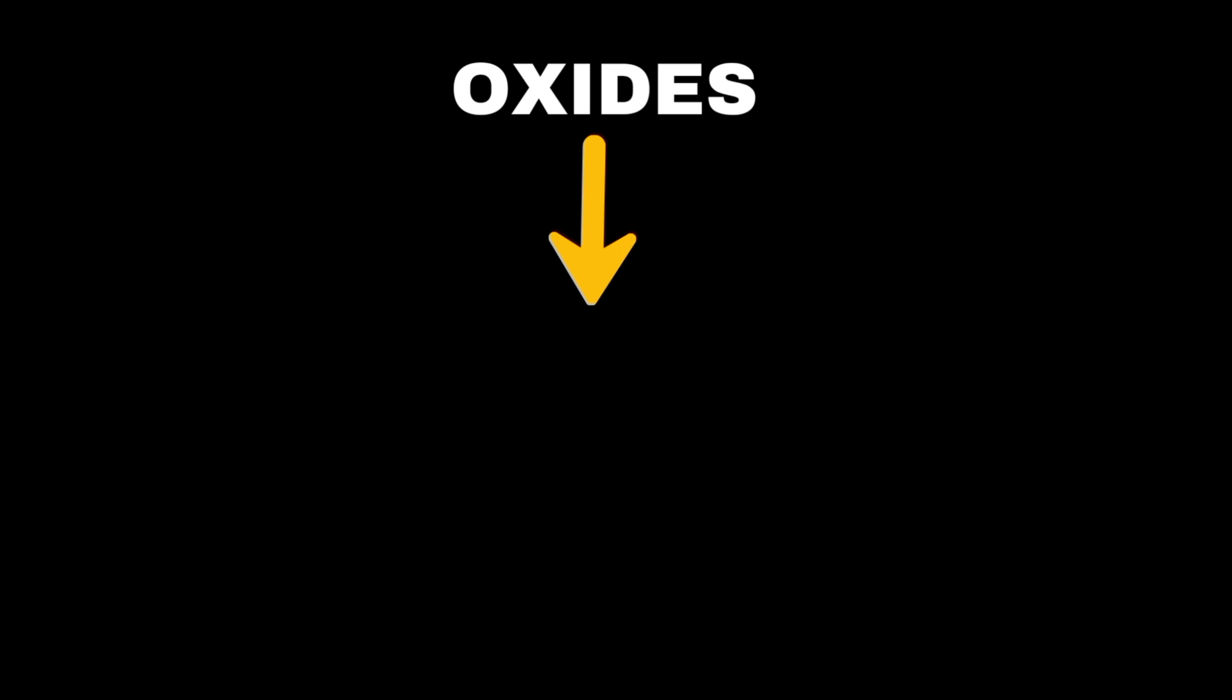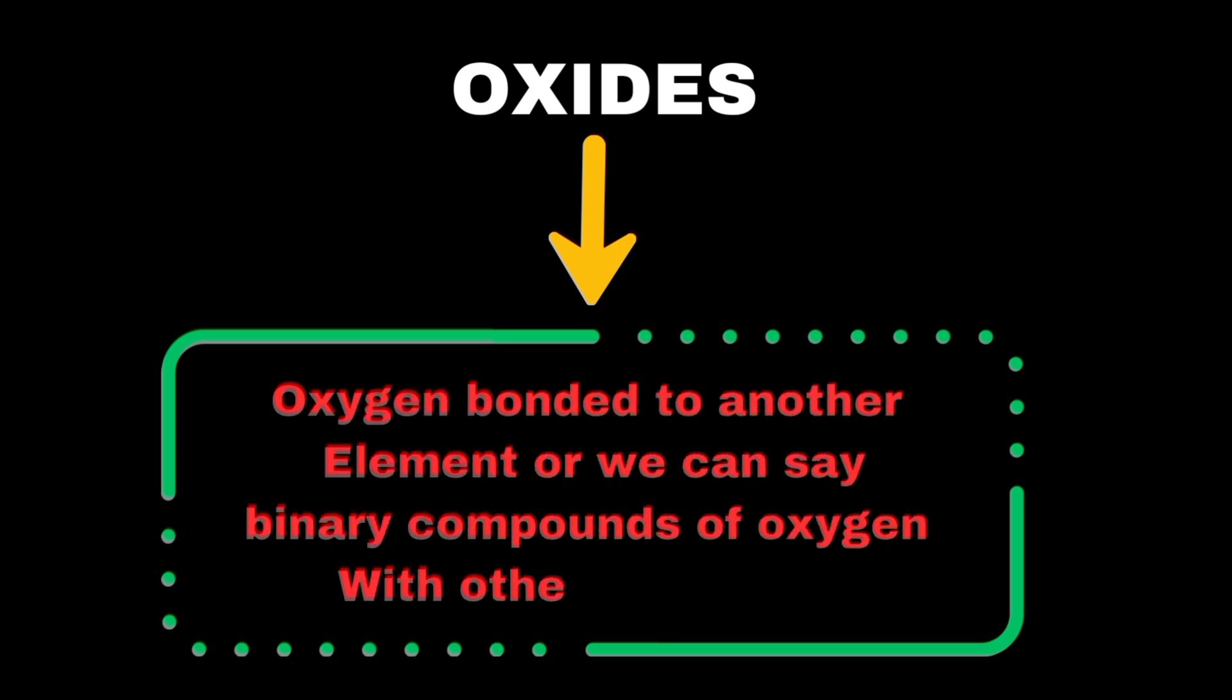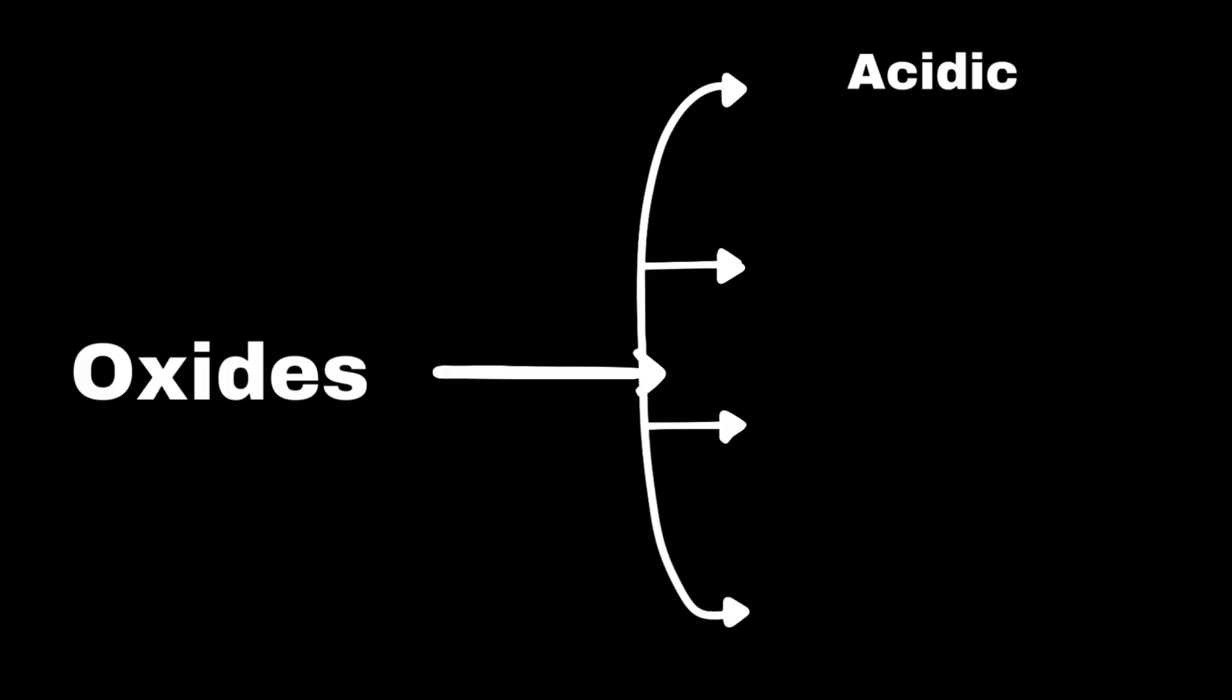Oxides are compounds that contain oxygen bonded to another element, or we can say binary compounds of oxygen with other elements. Oxides are further divided into acidic, basic, amphoteric, and neutral oxides.